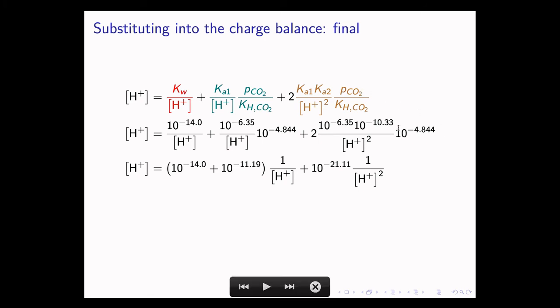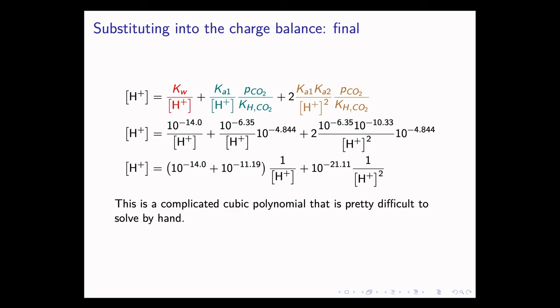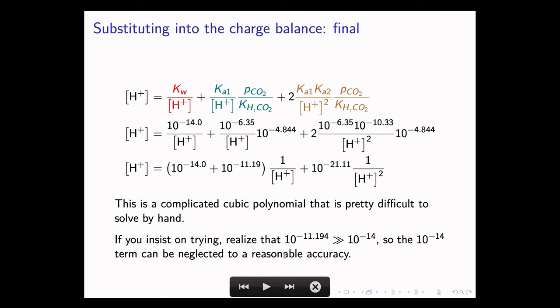Going from the first line to the second line, I put in numerical values for the various constants. And I'm not going to go through it in detail, but I simplify it. And we get to here, on the bottom. Now, this is a cubic polynomial. How do I know that? It's because if I wanted to solve it by hand, I would multiply every term in this equation by H+ squared, cancelling this denominator. And this would become a cubic term. This would become a linear term. And this would become a constant term. Now, this is pretty difficult to solve by hand. If you wish to try, just note that 10 to the negative 11.194 is much greater than 10 to the negative 14. So you can actually sort of ignore this term entirely and just replace it with zero. And this will be reasonably accurate and help you out in terms of the algebra that you have to do.